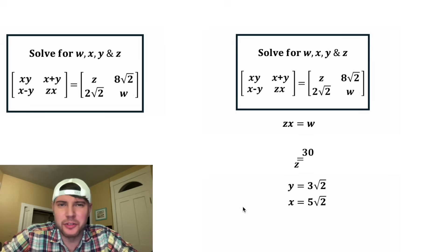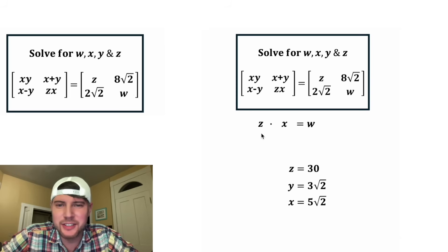And we're ready to solve for w. In place of z, we can plug in 30, and in place of x, we can plug in 5 root 2. 30 times 5 equals 150, and we have w equals 150 root 2.